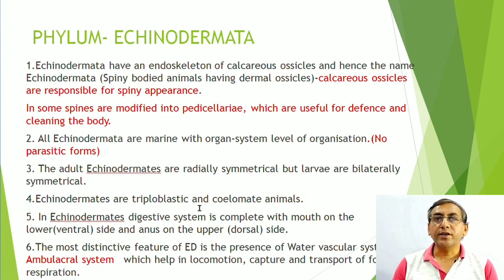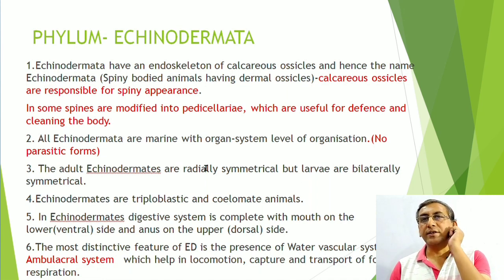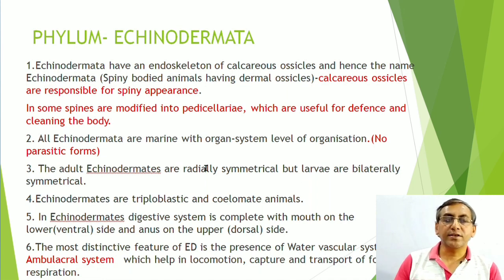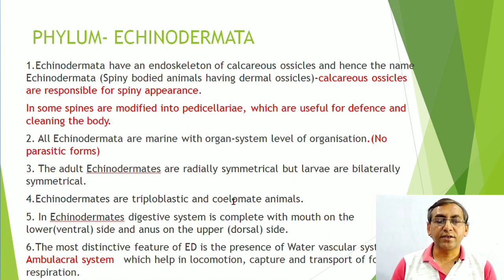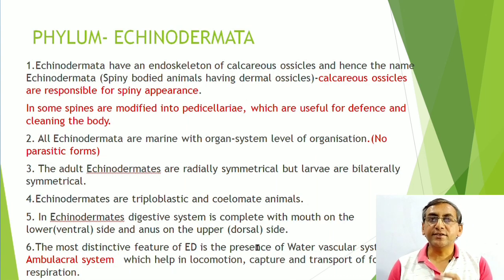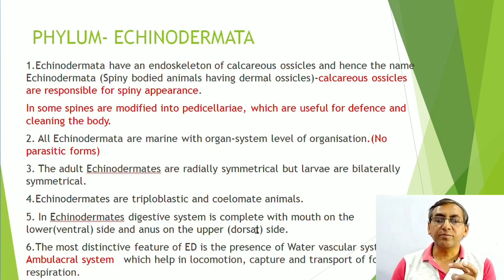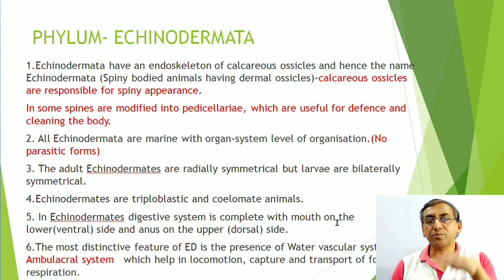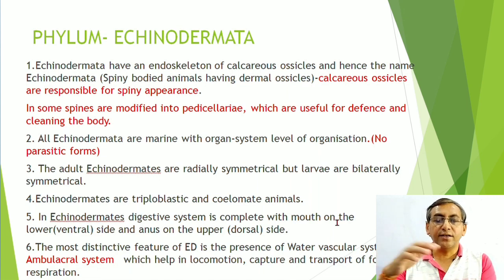Very important: in adult Echinodermata, the type of symmetry is pentamerous radial symmetry, and in larvae it is bilateral symmetry. They are triploblastic, coelomate animals. The digestive system is complete — tube within a tube body plan. The mouth is present on the lower (ventral) side and the anus on the upper (dorsal) side.